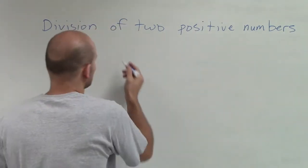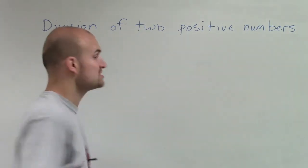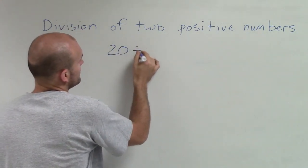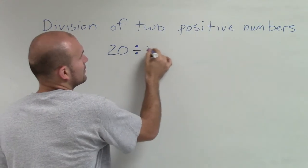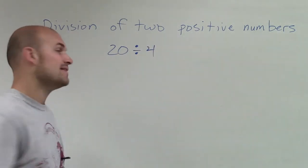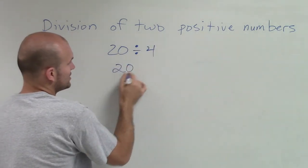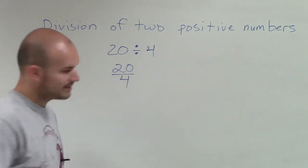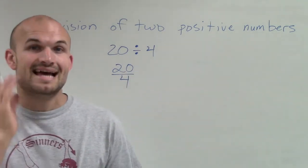There's a couple ways we write division. First of all, we can write 20 divided by 4. And the other way, we can write it as a fraction, 20 divided by 4, like that. And pretty much what they mean is the exact same thing.